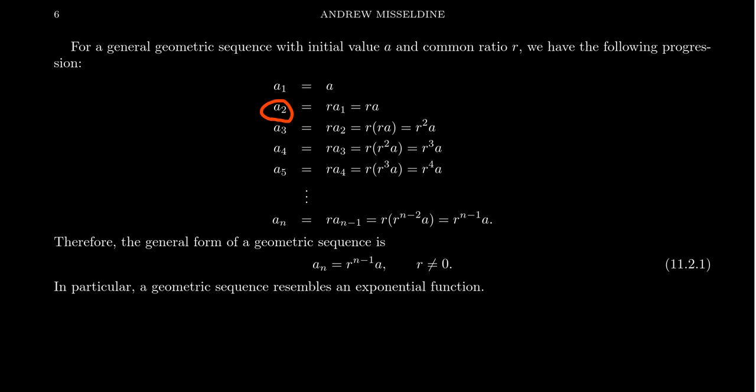To find the second term a_2, we multiply the first term a_1 by r. Since a_1 is just a, a_2 will be r times a. For a_3, we multiply a_2 by r. Since a_2 equals r times a, we get r times ra, which is r^2·a. For a_4, we have r times a_3. Since a_3 is r^2·a, therefore a_4 will be r^3·a. For the fifth term, a_5 will be r times a_4. Since a_4 was r^3·a, you get another r, giving r^4·a.